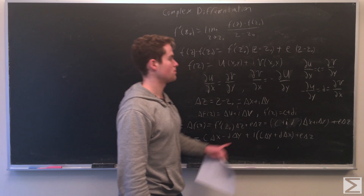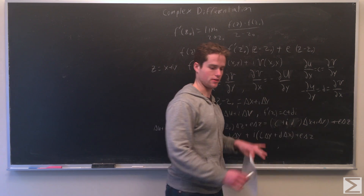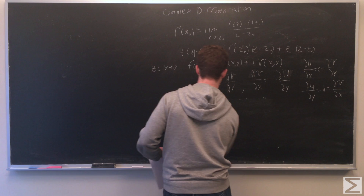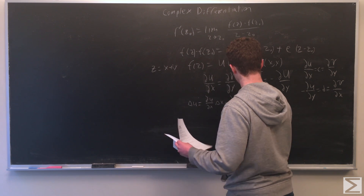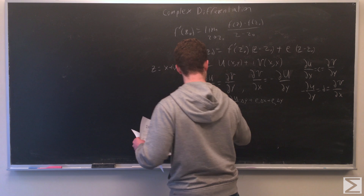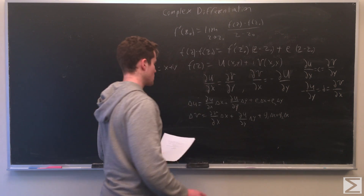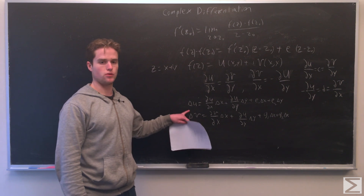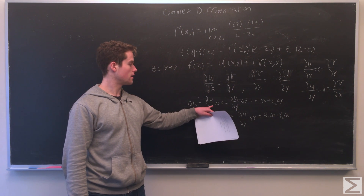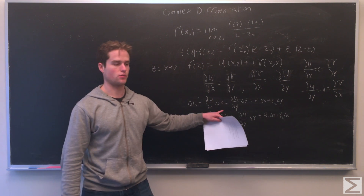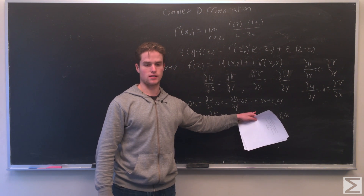Now we can assume that the Cauchy-Riemann equations are satisfied and show that f(z) has to be differentiable at that point. First we note that u and v are differentiable. Delta u equals partial u partial x times delta x plus partial u partial y times delta y plus two error variables e1 and e2, functions of x and y that go to zero as x and y go to zero.